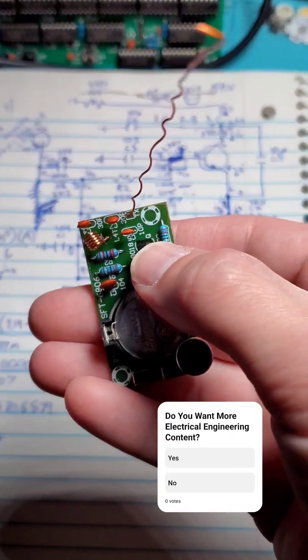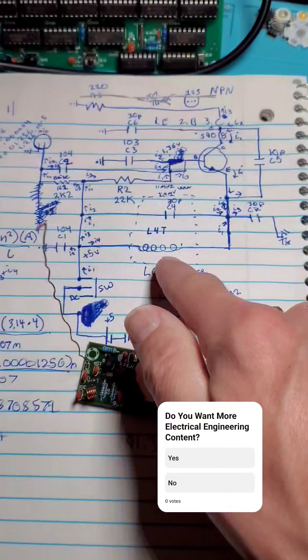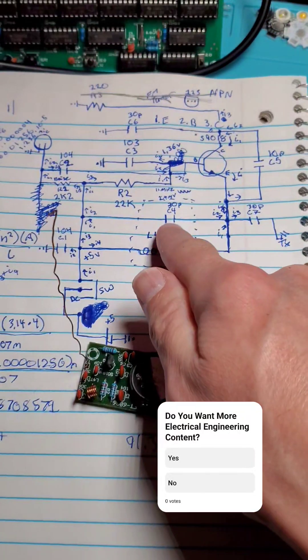FM tuning is achieved via the S9018 NPN transistor.